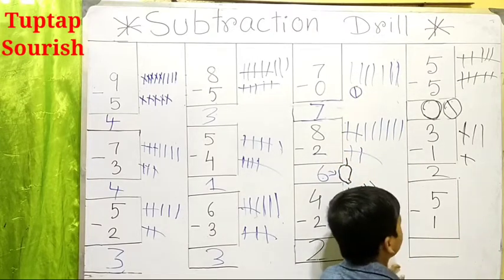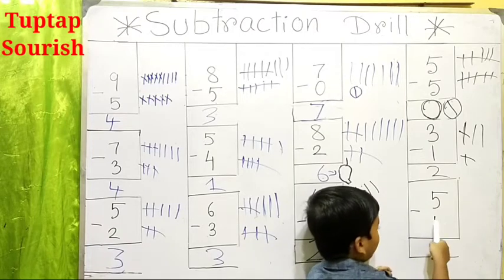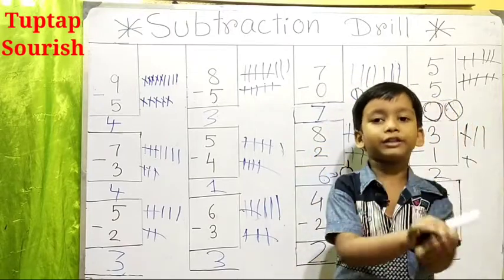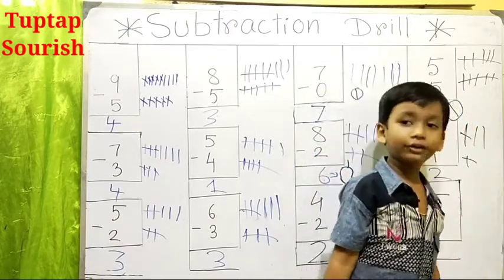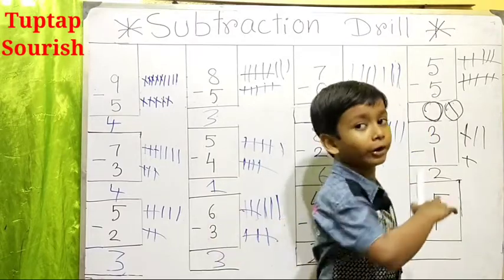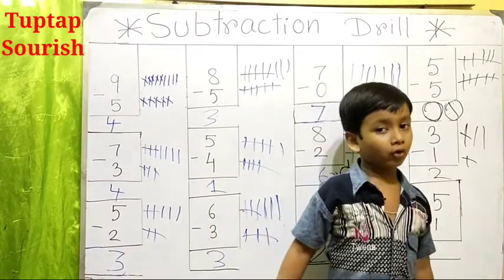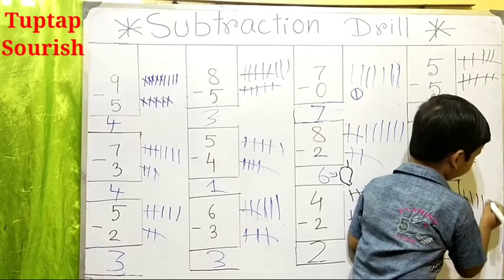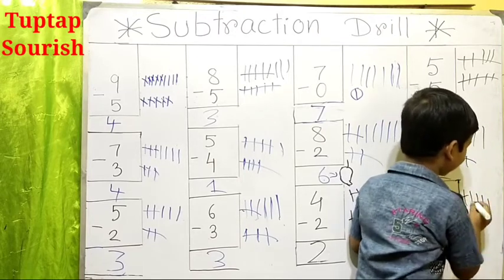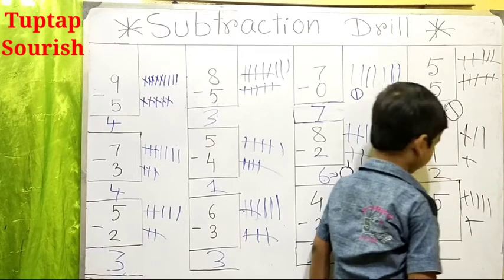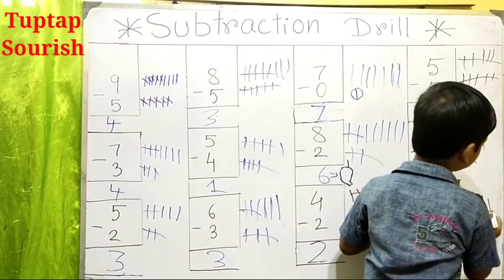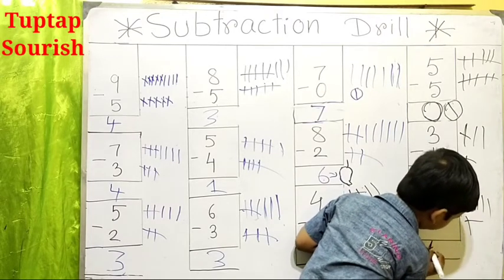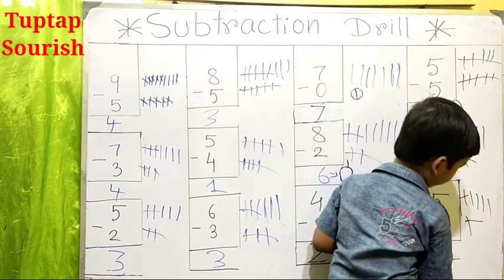Next example is 5 minus 1. Friends, you see 5 birds sitting on the branch of a tree and one bird flew away. So how many birds are left? Let's see: 1, 2, 3, 4, 5. One — cut, one — cut. Left: 1, 2, 3, 4. So the answer is 4.